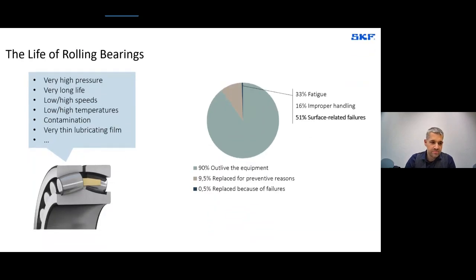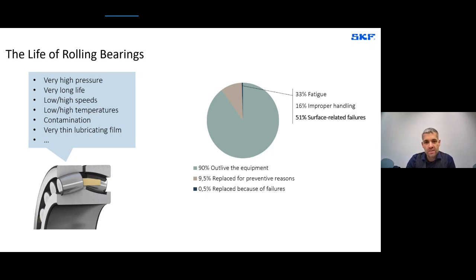The motivation: the life of rolling bearings is characterized by extreme high pressures — gigapascal magnitude in the contact — yet bearings should last years or even decades. Speeds range from very low to very high, temperatures vary widely, there's usually contamination, and all of this is carried by an extremely thin lubrication film just a few microns thick. Field statistics show around 90% of bearings outlast the equipment they're mounted to.